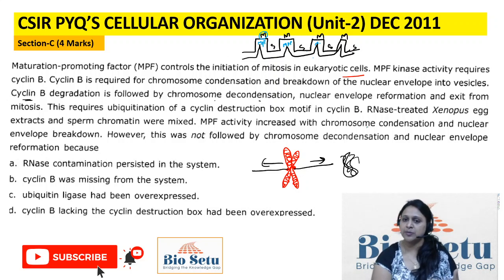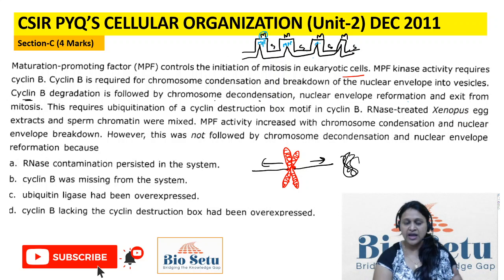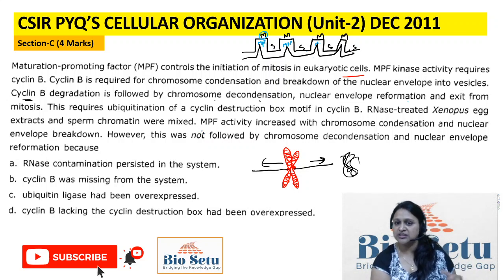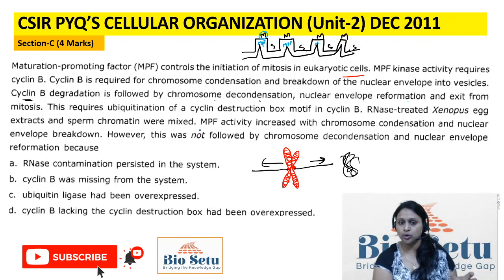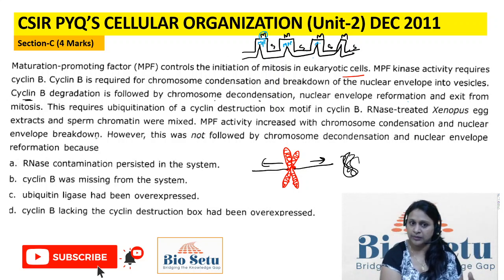What was the experiment of RNA treatment? A related question was asked about RNA treatment. When RNA-treated Xenopus egg extract and sperm chromatin are mixed, the result is: Maturation Promoting Factor activity is increasing with chromatin condensation and nuclear envelope breakdown. That means the activity of MPF has increased — M phase is happening.